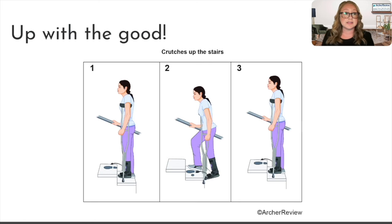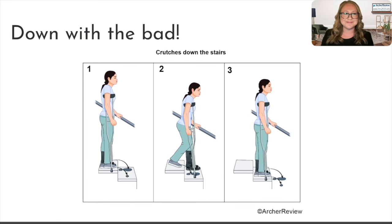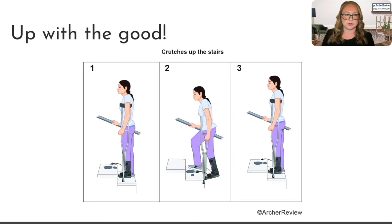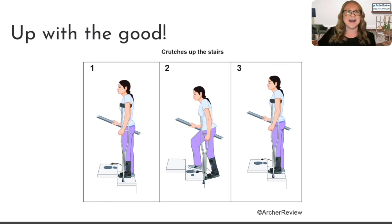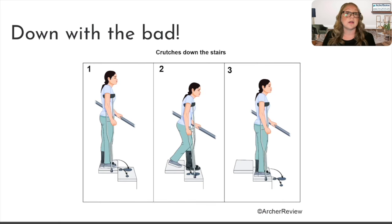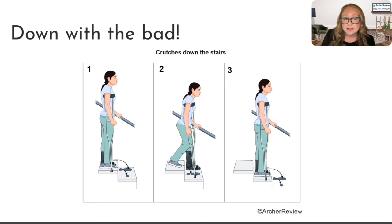Last but not least, we need to teach our client how to get up and down stairs with their crutches. We have an easy trick to remember: up with the good and down with the bad. To go up the stairs, the client has the crutch on their affected side away from the stair railing — hand on the railing, hand on the crutch on the affected side. They move their unaffected good leg up the first step — up with the good — then bring the affected leg and crutch to meet it. When coming down, they go down with the bad: crutch on the unaffected good side, move the affected bad leg down first, then bring the good unaffected leg down to meet it. Up with the good, down with the bad.